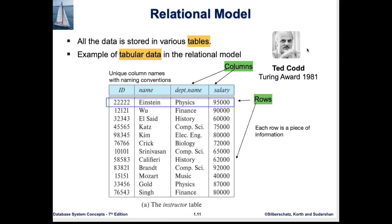The relational model became the theoretical basis of all relational, table-like databases. Tables with very many rows are sometimes called tall tables, and those with very many columns are called wide tables. Recent technology from Google meant for analytics deals with wide tables, also called big tables.